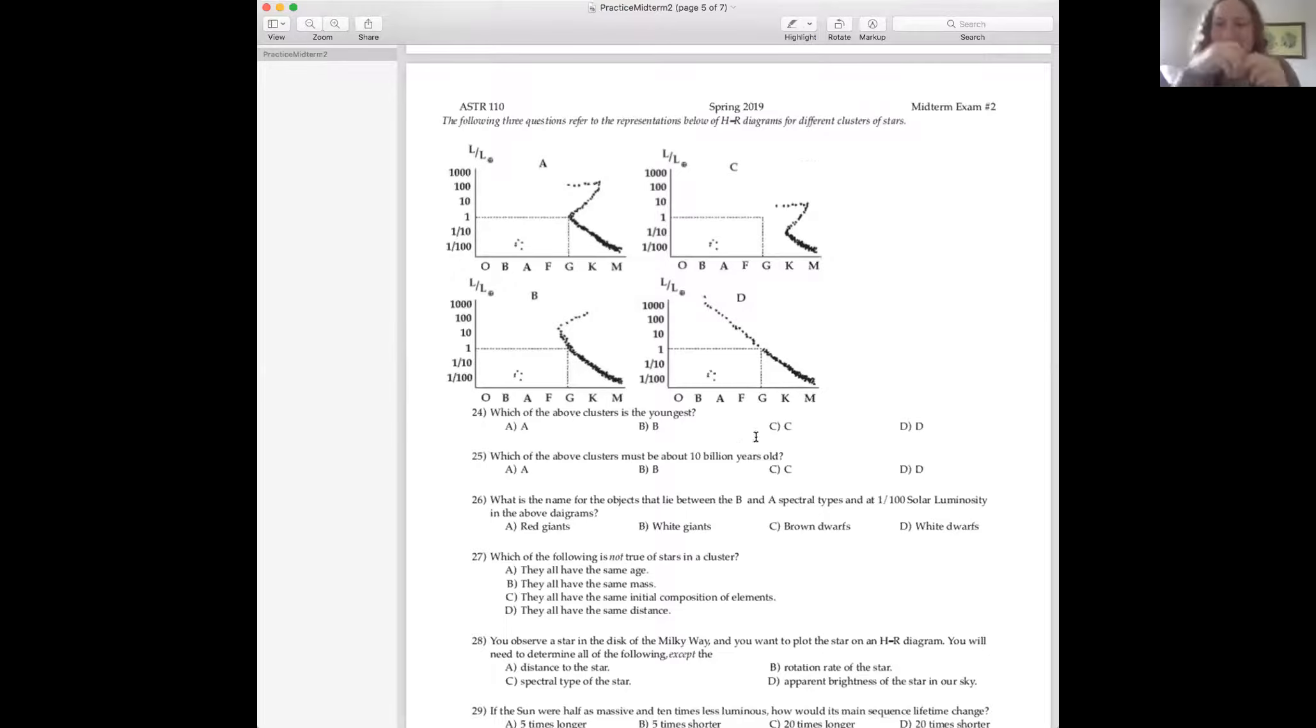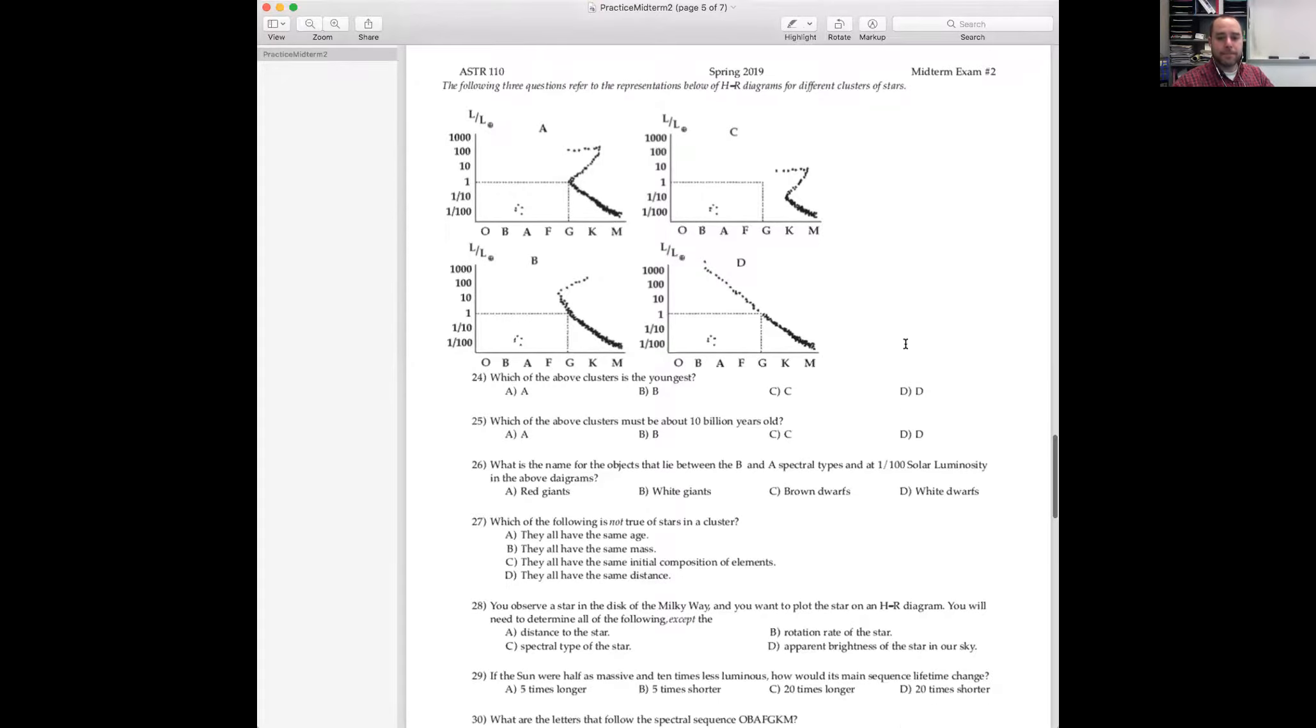Those numbers that you might want to know. So we need to know which cluster has an age of 10 billion years. It's the one where the sun is turning off the main sequence. That happens to be cluster A. This one solar luminosity G star, that is the sun right there, just turning off the main sequence. Cluster A must be 10 billion years old. C must be older. D and B must be younger. Good question, Jordan. That was also a tricky one.